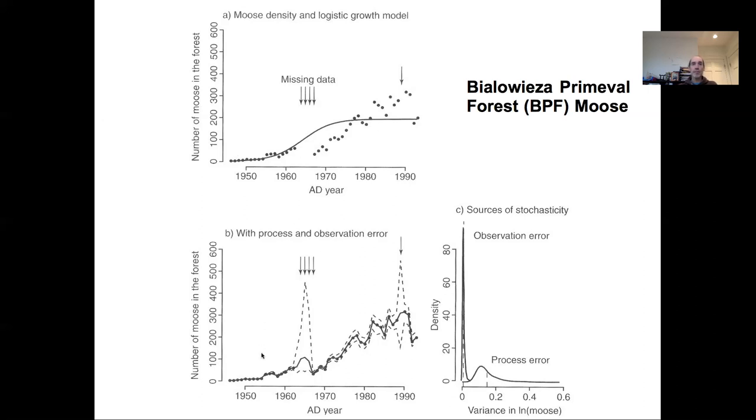In the lower panel, we are now fitting that same model as a process. Every time point we're estimating the latent state of the system in a state-space framework. From that time point, we're trying to predict the next time point, accounting for the process error and the observation error between the model and data. We can see the state-space model handling the gaps in the data.